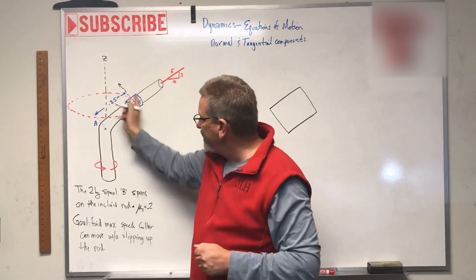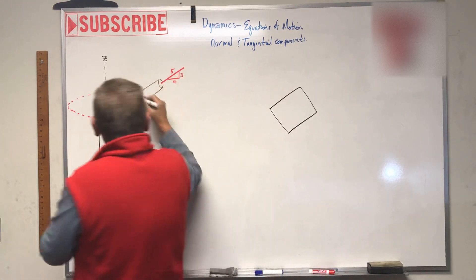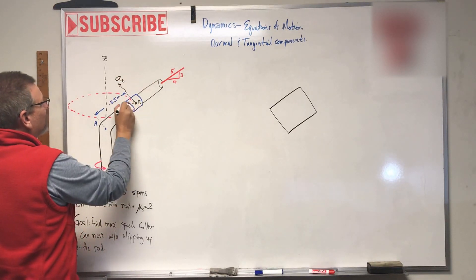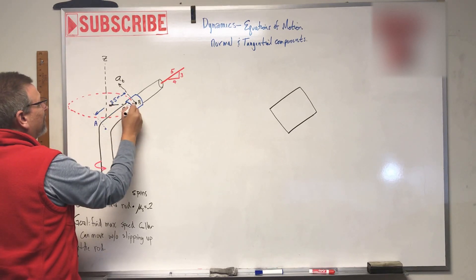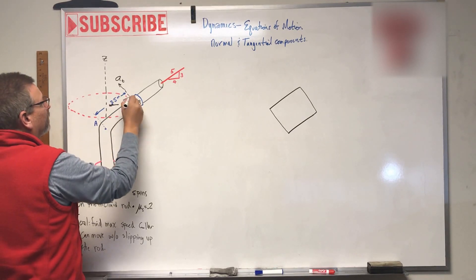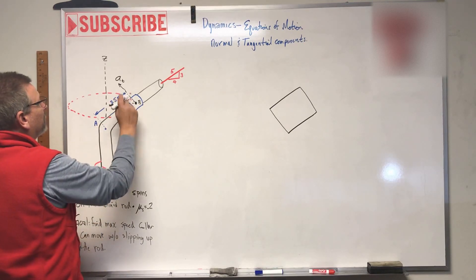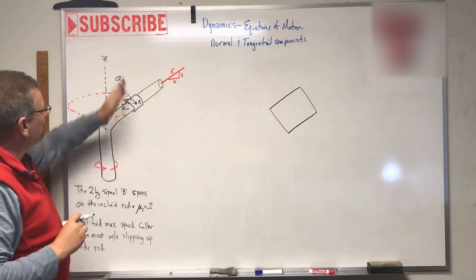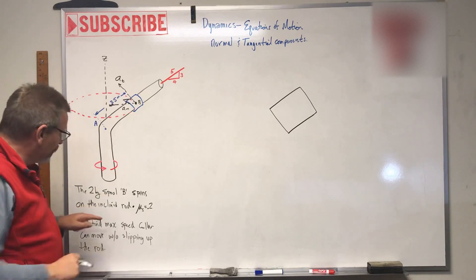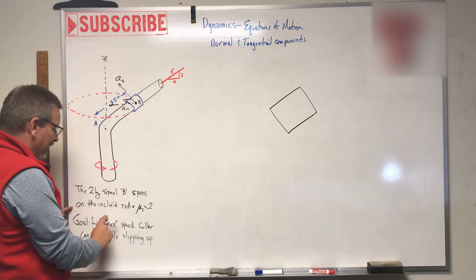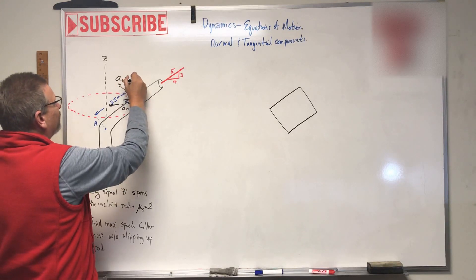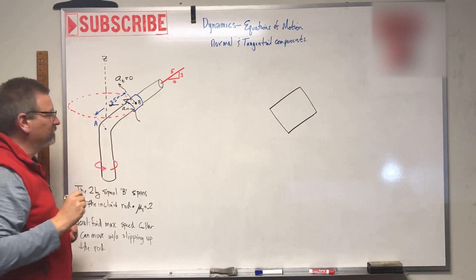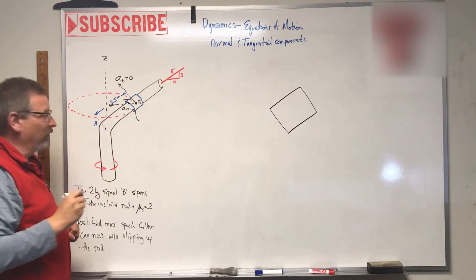So if this guy has two components of acceleration, number one component might be like right here, which is tangential to that path that it's spinning around. We'll call that AT and then it's got another one which is actually there. We'll call that AN because this is a right angle there. Do you see that?